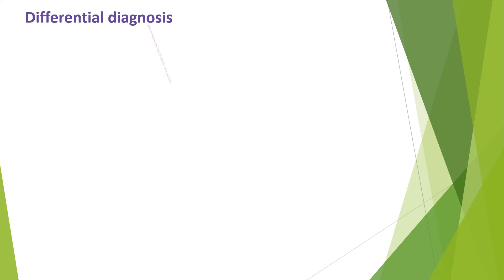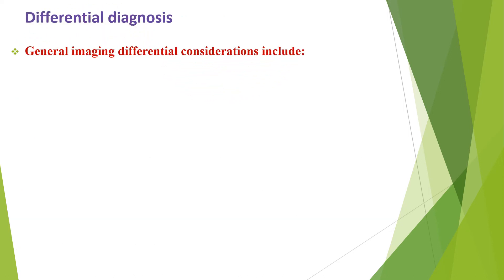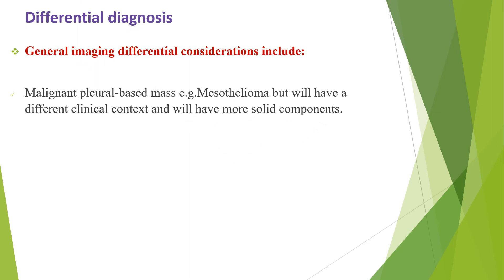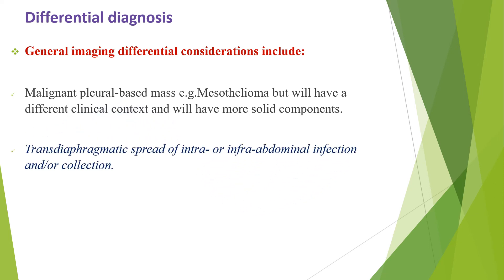The top differential diagnoses on imaging include: first, malignant pleural-based masses such as mesothelioma — in mesothelioma cases, there will be a different clinical context and more solid components. The other differential is transdiaphragmatic spread of intra- or infra-abdominal infection and collection.